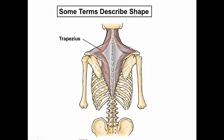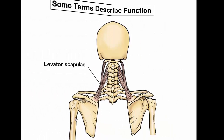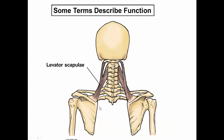Some muscle names describe shape — for instance, the trapezius, which is trapezoidal in shape. The digastric muscle has two bellies: an anterior belly and a posterior belly. Some terms describe function: if a muscle attaches to the superior part of the scapula and to the superior cervical vertebrae, and it contracts to elevate the scapula, we simply call it the levator scapulae.